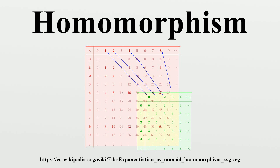A semi-group homomorphism is a map that preserves an associative binary operation. A monoid homomorphism is a semi-group homomorphism that maps the identity element to the identity of the codomain. A group homomorphism preserves the group structure, equivalently defined as a semi-group homomorphism between groups. A ring homomorphism preserves the ring structure. A linear map is a homomorphism that preserves the vector space structure, namely the abelian group structure and scalar multiplication.